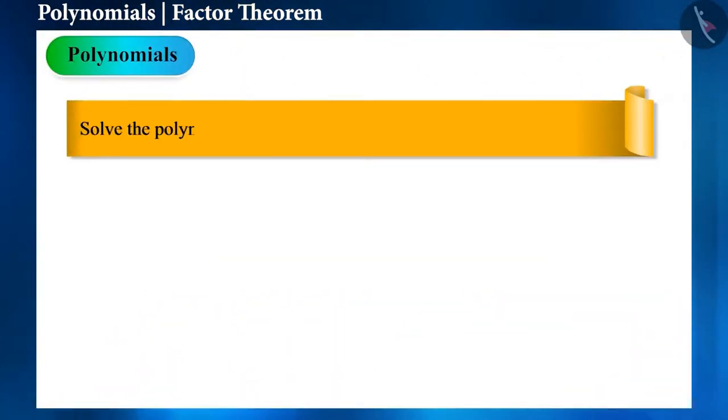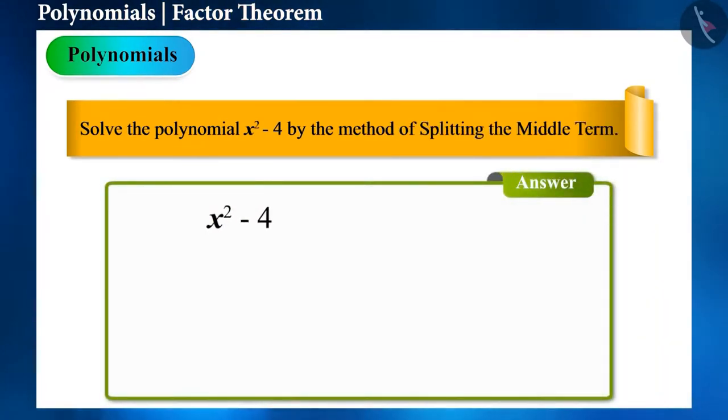Solve the given polynomial using the method of splitting the middle term. Friends, there is no middle term here. Can we write it like this: x² + 0x - 4? Yes, the coefficient of the middle term is 0 and the constant is -4.